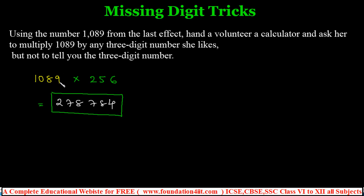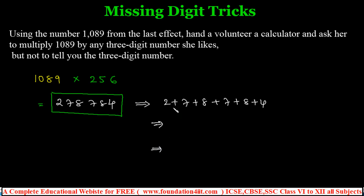From those five digits, you can tell them the missing sixth digit. The trick: 1089 is a multiple of 9 (1+0+8+9 = 18, 1+8 = 9). Any multiple of 9 multiplied by any number gives another multiple of 9, whose digits always sum to a multiple of 9. For 278,784: 2+7+8+7+8+4 = 36, and 3+6 = 9. So the digit sum always reduces to 9.